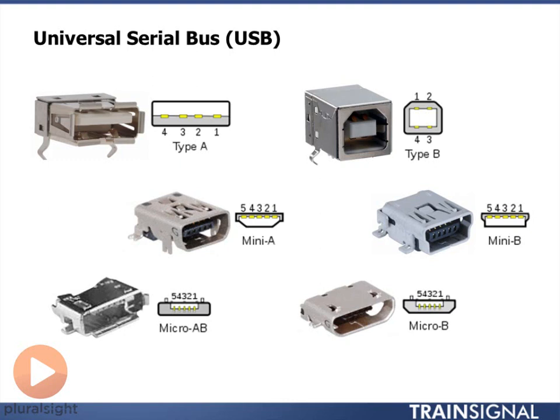You will find some of these minis and micros out on different devices. External storage devices very often will have a mini connector. Certain cell phones used to have, and even today might still have, the mini B connector, whereas now they'll have the micro B on external devices like cell phones. One other thing to know about USB is that a single USB controller can handle up to 127 devices.